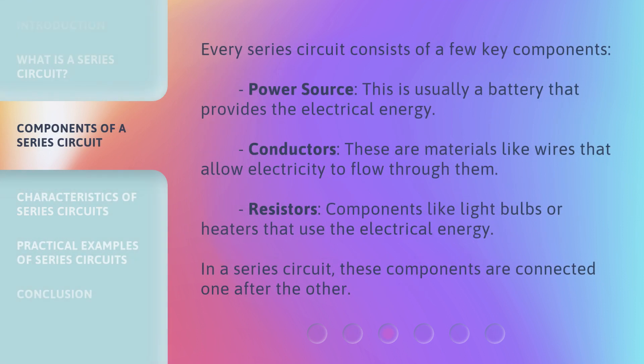Every series circuit consists of a few key components. Power source: this is usually a battery that provides the electrical energy. Conductors: these are materials like wires that allow electricity to flow through them. Resistors: components like light bulbs or heaters that use the electrical energy. In a series circuit, these components are connected one after the other.